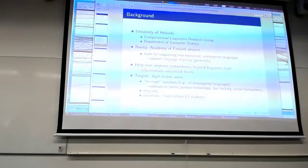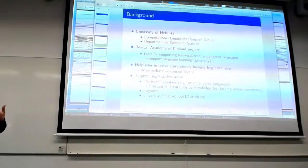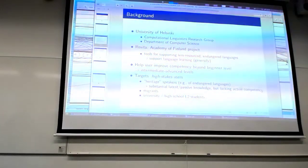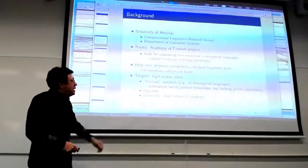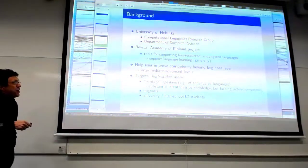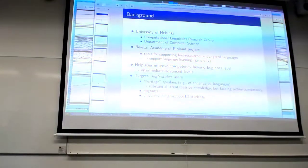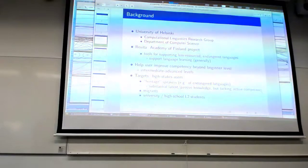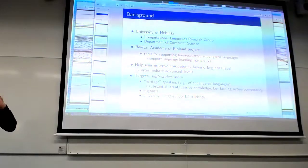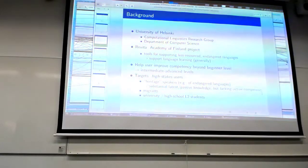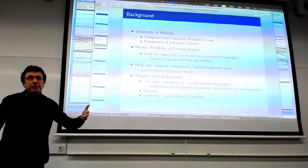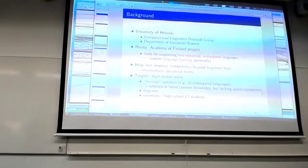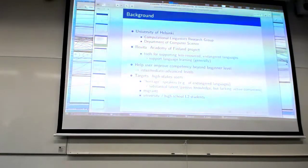This is for intermediate and advanced studies. The users are so-called high-stakes users — people who are committed to learning for one reason or another, not casual learners. There are several categories: one, the original target group, was heritage speakers — people who have a lot of passive knowledge, who grew up where grandparents or parents spoke a language but it was not fully used, so they have passive knowledge but lack active competency. That's what we focus on: activating competency. Also migrants, for example in Finland. And of course university and high school students. High-stakes means committed for either a job, citizenship, or passing courses.